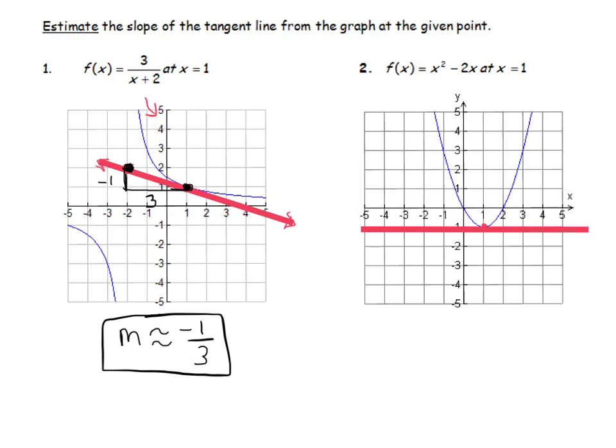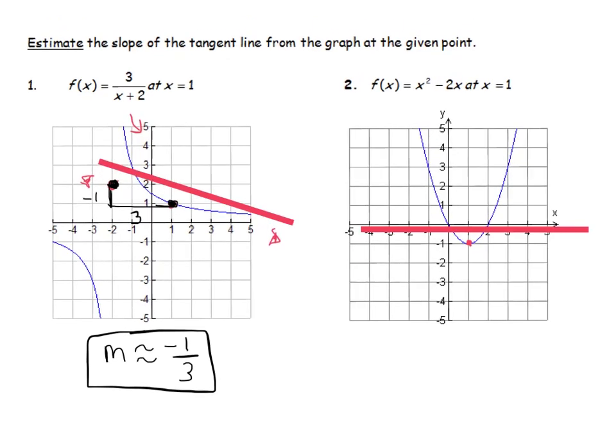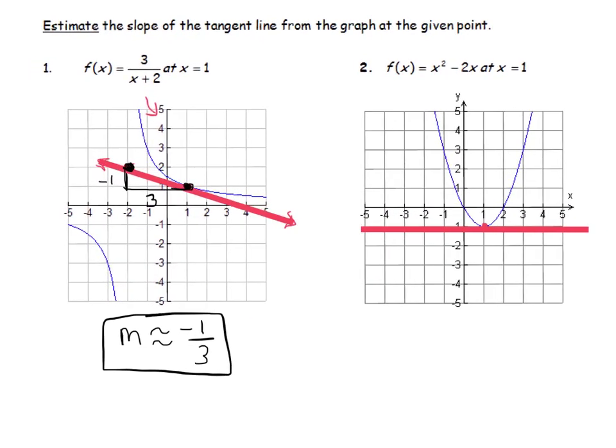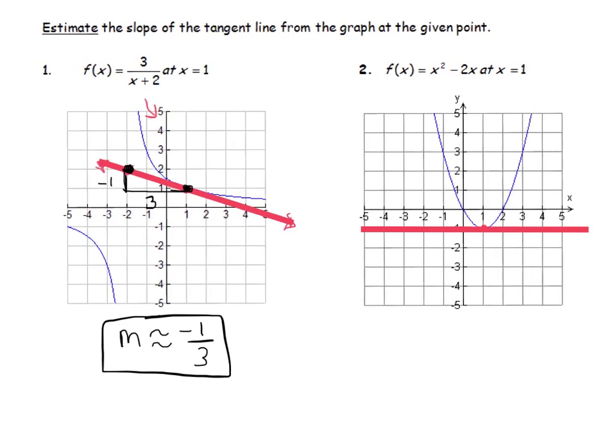I mean, again, if you were to let go right at that instant, ignoring gravity, you would just go off horizontally. So the slope of that horizontal line is easy to compute. The slope of that line is easy to compute, it's just zero, right?